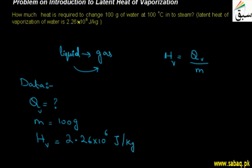Students, now we have collected all the data. Now we will find the solution. The latent heat of vaporization formula is HV = QV/m. In this case, we need to find the value of QV.